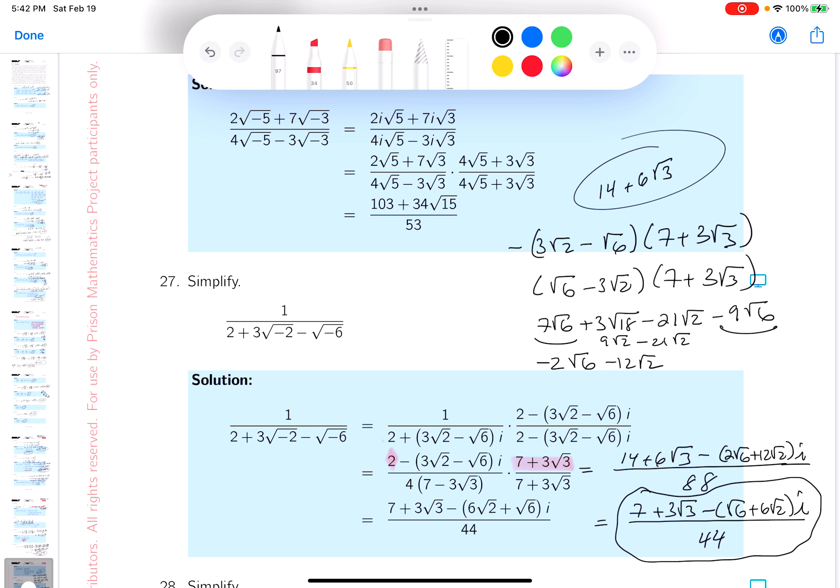All right, I'll put a little circle on that. And let's see how we did. Did I get the 44? I did. Did I get 7 + 3√3? I did. Did I get a minus sign? I did. Did I get 6√2? I did. Did I get √6? I did. Did I get the i? I did. Things are looking good. Was it difficult to do? Yeah, it's kind of tedious, but the point is getting to the end. We want to get to the end. Thank you.